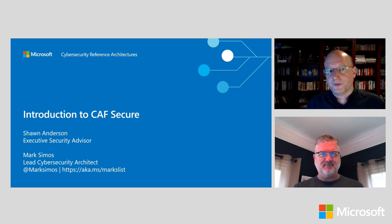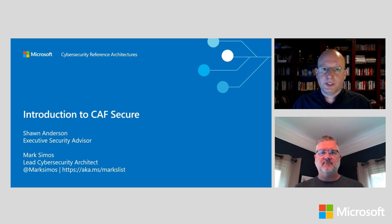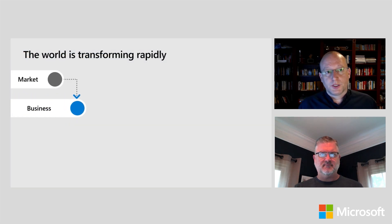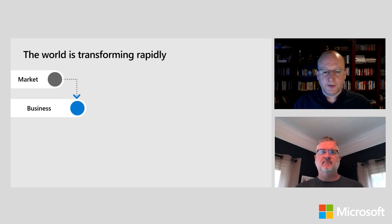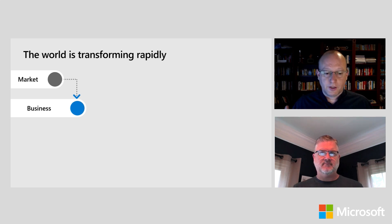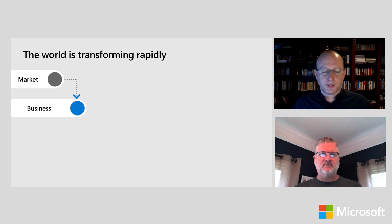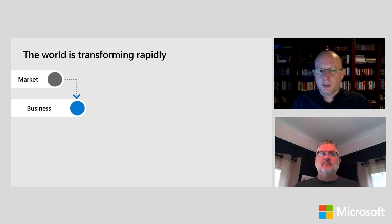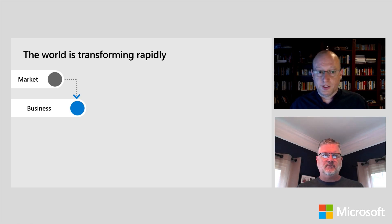We're going to cover a quick overview of the secure methodology in CAF, starting with what led to it and where the security industry is today. Markets are transforming because of disruptive organizations like Uber and Amazon that are using digital technology to change how business is done — how consumers, customers, partners, and suppliers interact with companies and government agencies.